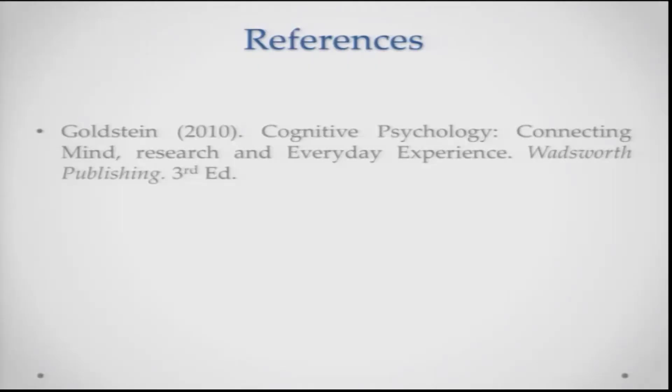That was all from me about knowledge and representation in the brain. I hope I made the point clear that knowledge is stored in a very distributed fashion in the brain, and I hope I also made it clear where these differences are actually stemming from. Thank you.